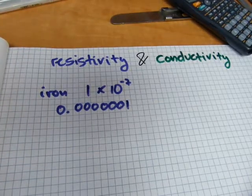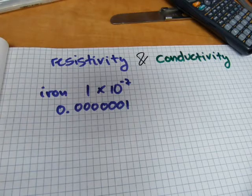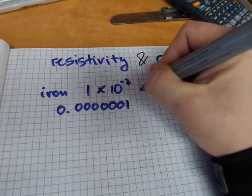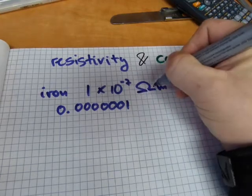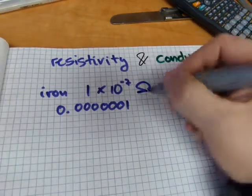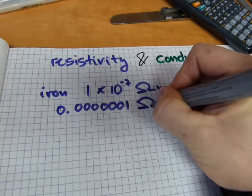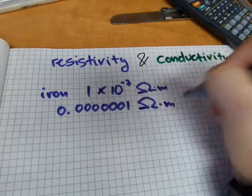That number is the resistivity of iron. Now, it has a unit of measurement as well, and its unit of measurement is ohm-meters with a center dot there for multiplication. There, ohm-meters.